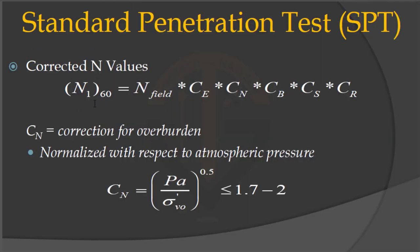The corrected N value N₁₆₀ = N_field × Ce × CN × Cb × Cs × Cr, where CN is the correction for overburden. CN can be found using the formula: CN = (Pa / σ'v)^0.5, where Pa is the atmospheric pressure and σ'v is the overburden stress. CN should be less than or equal to 1.72. The overburden stress can be found by multiplying the unit weight by the height.